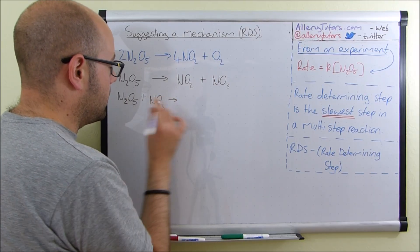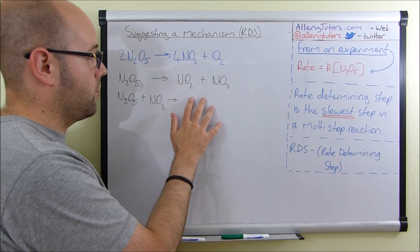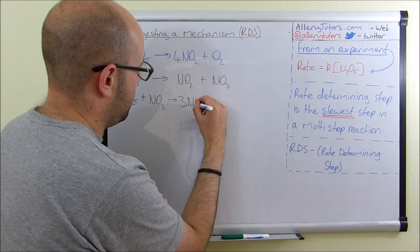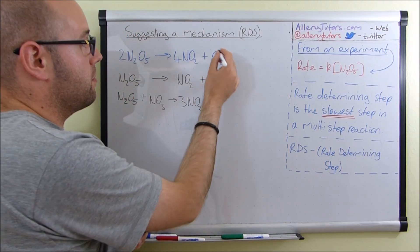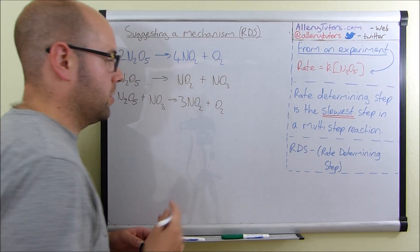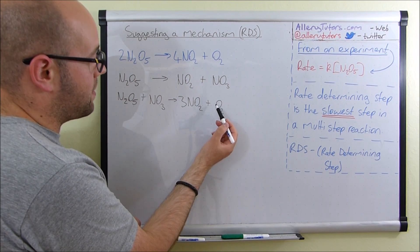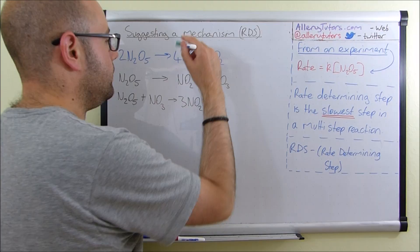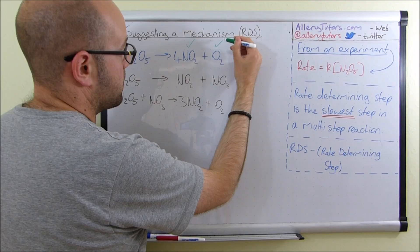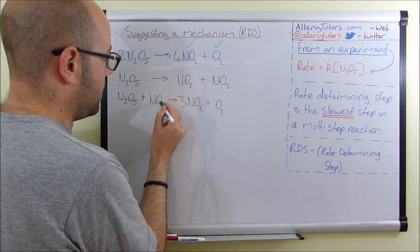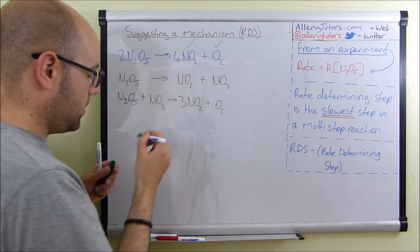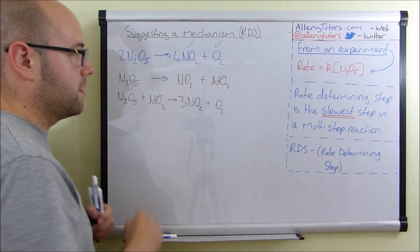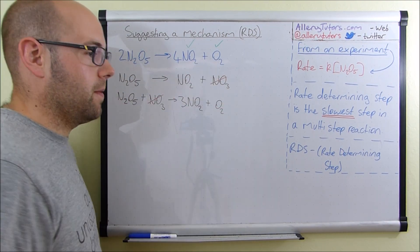When we react N₂O₅ and NO₃ together, we have to get products that add up to the overall equation. We've got three more NO₂ molecules to account for, so we put 3NO₂ on the right, and we also need an O₂ molecule. Adding up: NO₂ from step one plus 3NO₂ from step two gives four NO₂ — correct. We have O₂ from step two. NO₃ is formed in step one and consumed in step two, so it cancels out as an intermediate. All of this adds up to give the initial overall equation.